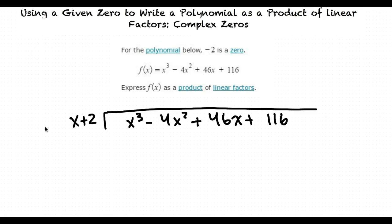The first step is to find a term, which will later be written here, where that term multiplied by x plus 2 will result in x cubed. A term that satisfies this property is x squared.